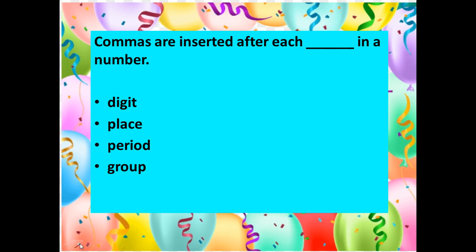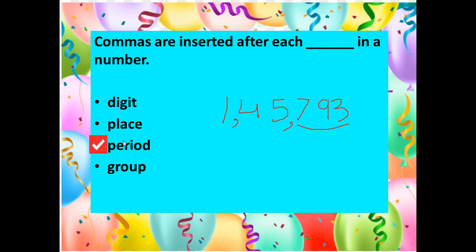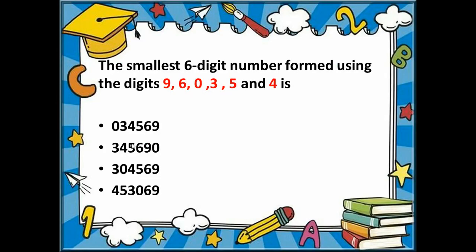The next question is: commas are inserted after each what in a number? To answer this, let's take a number with digits 1, 4, 5, 7, 9, 3, and 6. Writing it according to the Indian system, the first comma comes after ones, tens, and hundreds — the ones period. Then five and four are in the thousands and ten-thousands period, so another comma goes there. Then one is in the lakhs period. So commas are inserted according to periods, and the correct answer is 'period'.